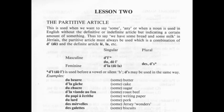The partitive article. This is used when we want to say 'some,' 'any,' or when a noun is used in English without the definite or indefinite article, but indicating a certain amount of something.